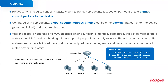After the global IP address and MAC address binding function is manually configured, the device verifies the IP address and MAC address binding relationship of inbound packets. Only received IP packets whose source IP and source MAC match a security address binding entry are accepted, and packets that do not match are discarded. The control of packets is based on the binding entries.